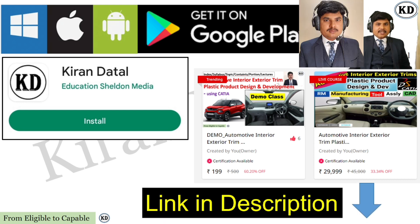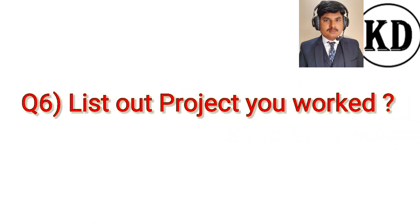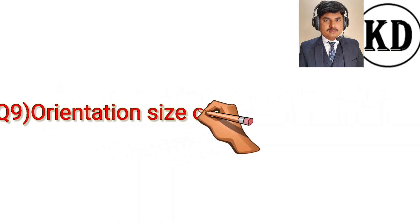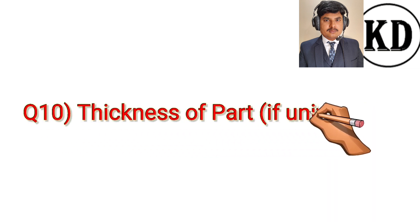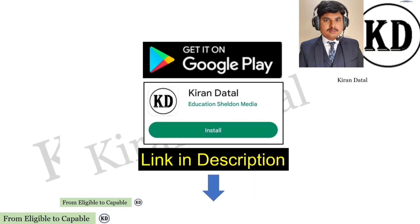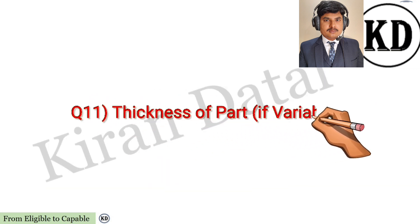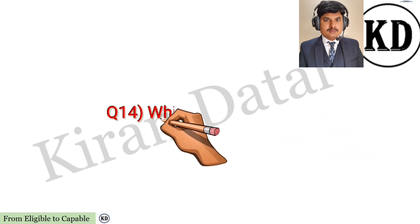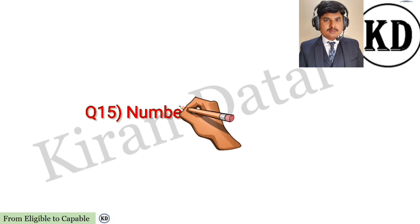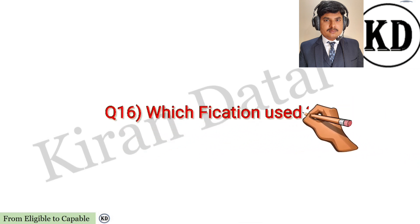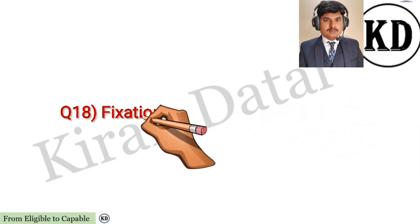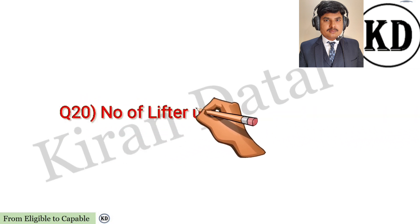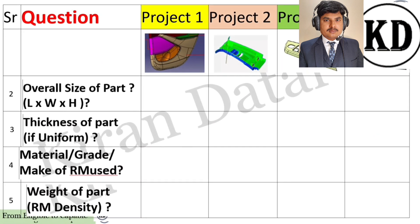Link in description box: list out projects you worked on, client and OEM name, project program number, orientation, size of part in assembly, thickness of part if uniform or if variable, color of part and RAL number, manufacturing type and processes, which locator was used, number of locators used, which fixation was used, and number of fixations used.